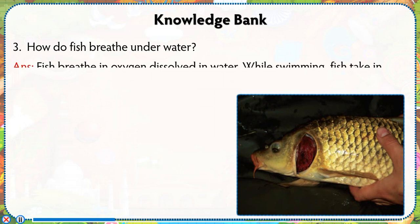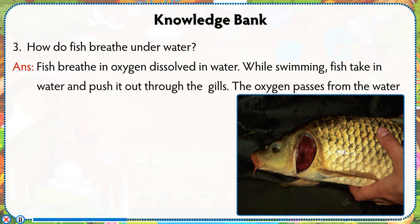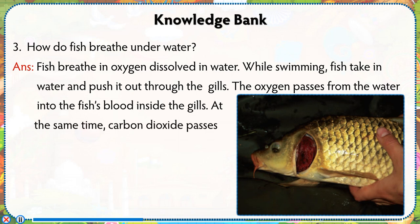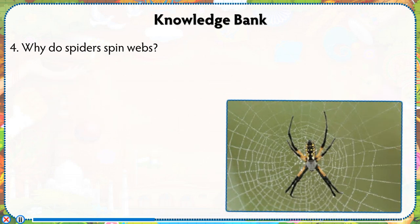How do fish breathe underwater? Fish breathe in oxygen dissolved in water. While swimming, fish take in water and push it out through the gills. The oxygen passes from the water into the fish's blood inside the gills. At the same time, carbon dioxide passes from blood into the outgoing water.